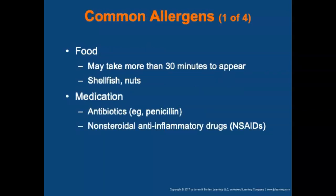The most common allergens fall into five general categories. First is food — certain foods such as shellfish and peanuts may be the most common trigger of anaphylaxis. Foods account for 30% of deaths from anaphylaxis, most commonly in adolescents and young adults. Some symptoms may take more than 30 minutes to appear and may not include skin signs such as hives. The reaction can be severe and involve the respiratory and cardiovascular systems.